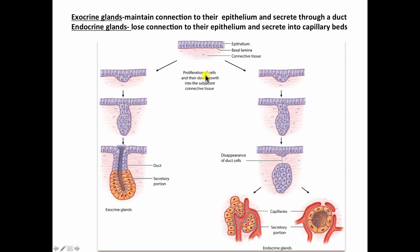They both derive from a downgrowth of epithelium into the underlying tissue. However, exocrine glands maintain their connection to that epithelium and secrete their product onto the surface of the epithelium, whereas endocrine glands lose their connection to the epithelium, become highly vascularized, and secrete their product into the capillaries which generally surround the endocrine gland, and that is then carried to other parts of the body.